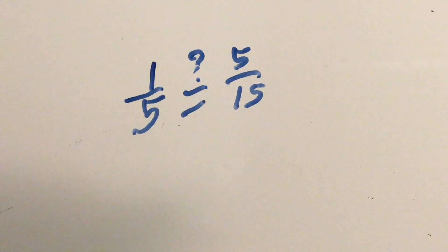So the question here is, does 1 over 5 equal 5 over 15, or is the ratio 1 over 5 equivalent to the ratio of 5 over 15, or are both these two ratios proportional to each other? Let's find out.